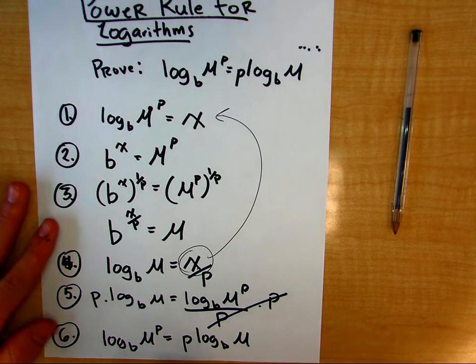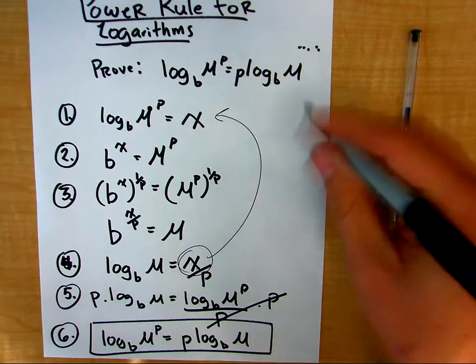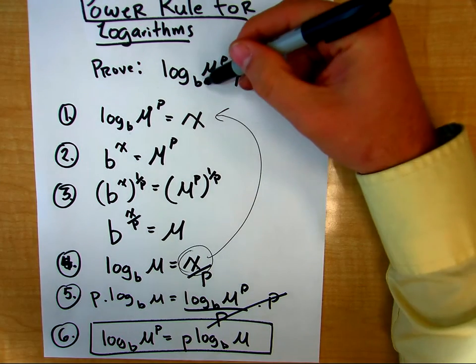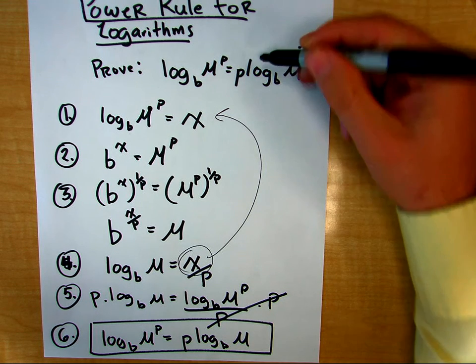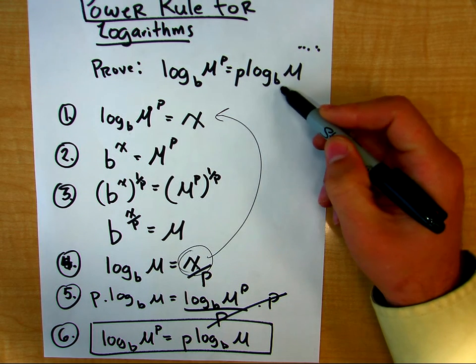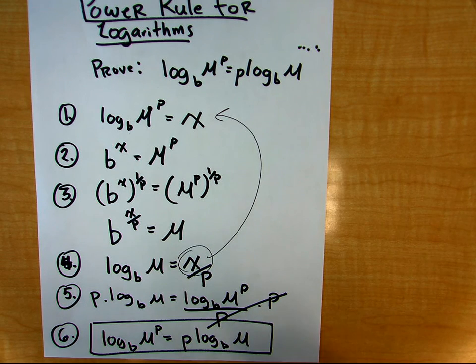So here we can see that, just using some manipulations, we can prove that log with base b of m raised to the p power is equal to p times log with base b of m. Thank you.